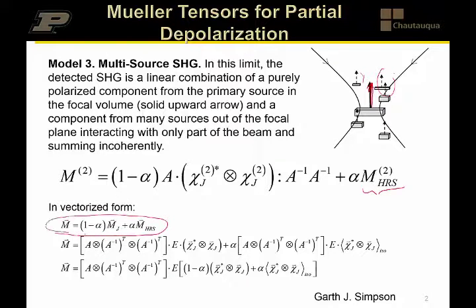our total Mueller, this is in the vectorized notation, the total Mueller tensor is just going to be the Jones, the purely polarized component, times 1 minus alpha, plus the hyper-Raley component times alpha.